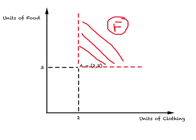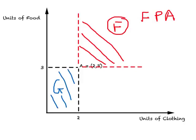Under F, you will have more of both clothing and food relative to A, and so because of non-satiety, F must be preferred over A. Now look at another zone — let's call this entire area G. When you compare A to G, again because of non-satiety, we know A must be preferred over G. So in these two quadrants you can compare commodity bundles relative to A.